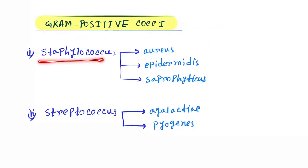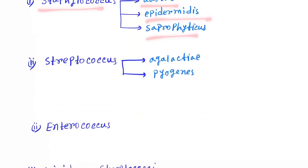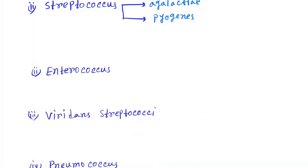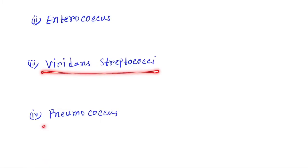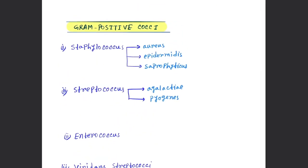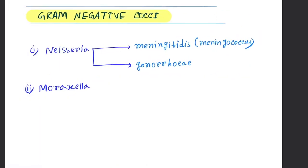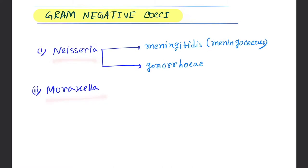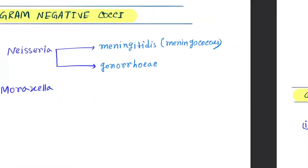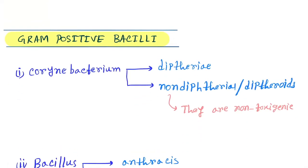So Staphylococcus aureus, epidermidis, Staphylococcus. Next, Streptococcus agalactiae, pyogenes. Next, Enterococcus, Viridans Streptococcus, and Pneumococcus. That's all the gram positive cocci. Now gram negative cocci: Neisseria, Moraxella. Neisseria is Neisseria meningitidis and Neisseria gonorrhoeae.